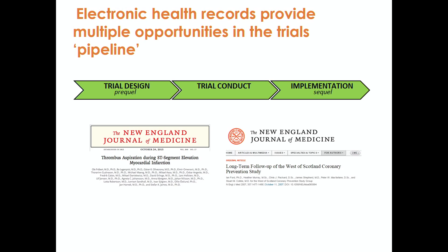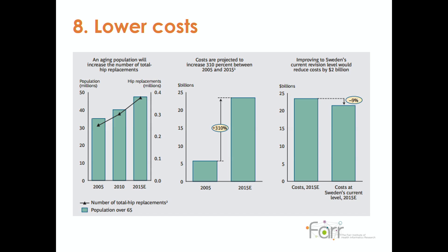Health records might help design trials — the so-called 'prequel.' Here's an example where a whole trial was done in the context of an electronic health record and then followed up; and another example where electronic health records were used for follow-up after the trial, and then in the implementation of trial results. We should care about advances that lead to lower costs in the healthcare system, and access to quality registries demonstrating quality improvements has been shown to be associated with lower costs.